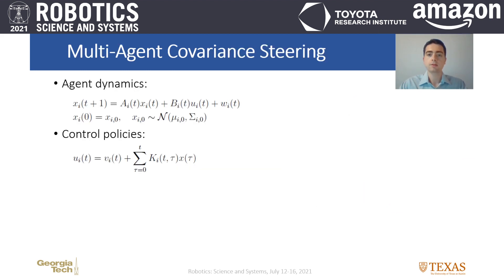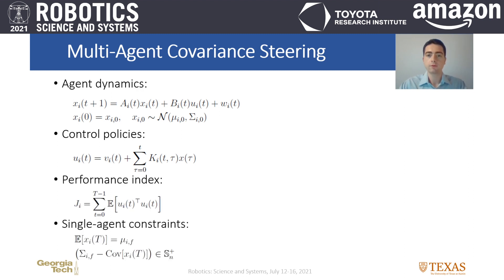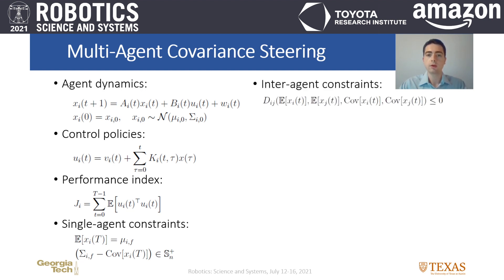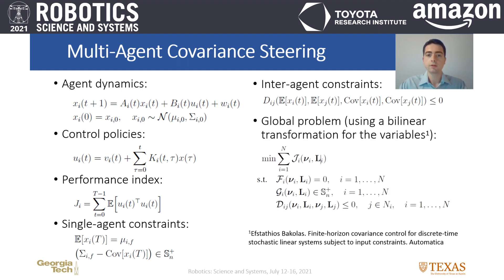Proceeding with the multi-agent covariance steering problem formulation, each agent has linear discrete time dynamics and their control policies consist of a feed-forward and state feedback term. The goal of each agent is to minimize its control effort while steering its terminal state mean and covariance under some prescribed targets. Note that these constraints could also involve previous time instances. We also consider interagent constraints between neighboring agents involving their means and covariances. By using a known bilinear transformation for the control policy variables, we arrive at the following problem.